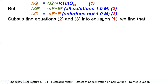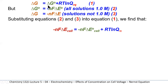If we substitute equation two and equation three into the first equation — for delta G we substitute minus NF delta E, and for delta G-naught we substitute minus NF delta E-cell — this is the result we get. Delta G equals minus NF delta E, and delta G-naught equals minus NF delta E-cell. F is a Faraday, which is the charge on a mole of electrons, and N is the number of electrons in the half-cell reactions.